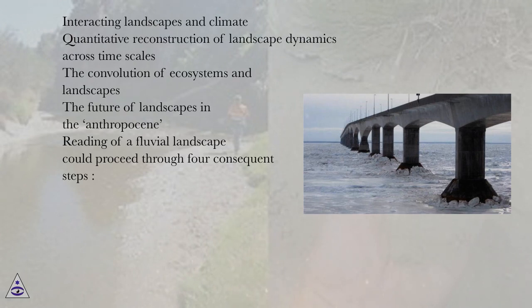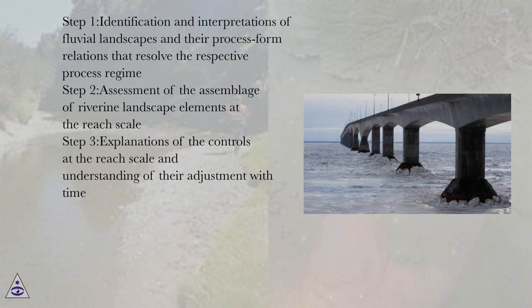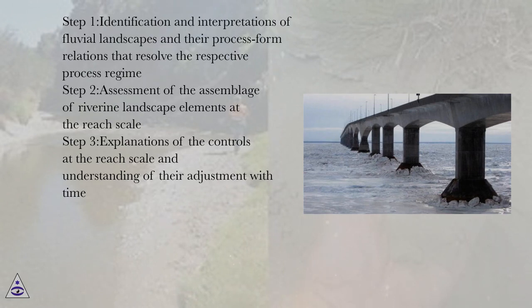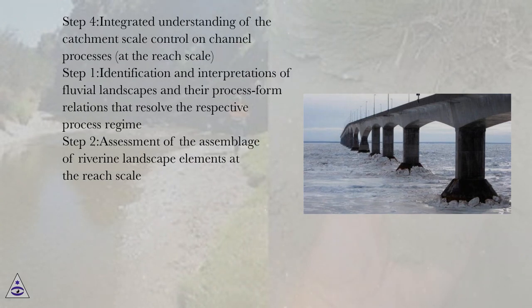Reading of a fluvial landscape could proceed through four consequent steps. Step 1: identification and interpretations of fluvial landscapes and their process-form relations that resolve the respective process regime. Step 2: assessment of the assemblage of riverine landscape elements at the reach scale. Step 3: explanations of the controls at the reach scale and understanding of their adjustment with time. Step 4: integrated understanding of the catchment scale control and channel processes.